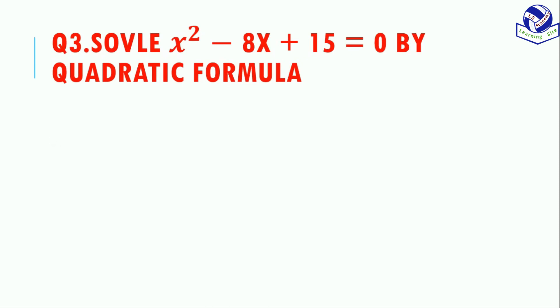So we have x = (8 ± √4) / 2. As we know, √4 = 2, so x = (8 ± 2) / 2.